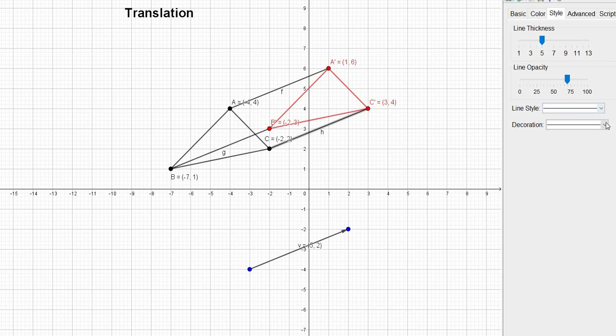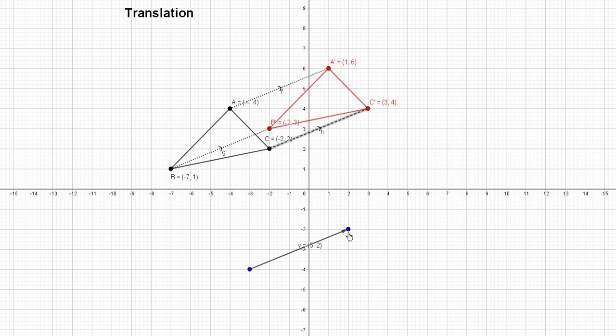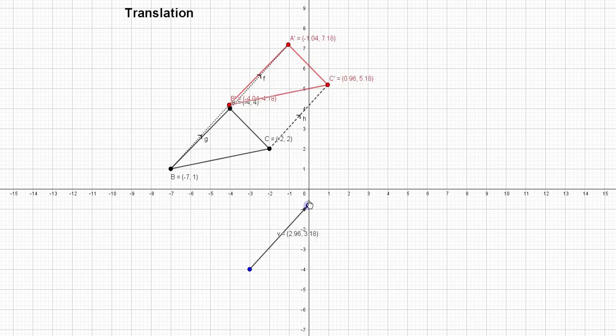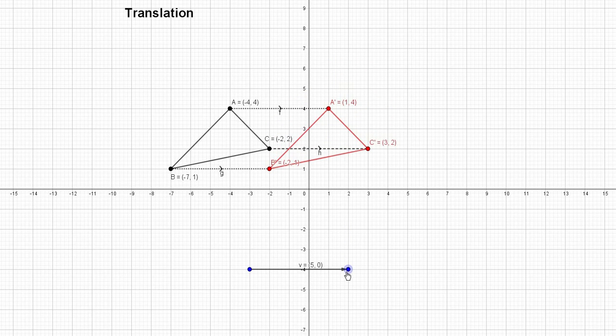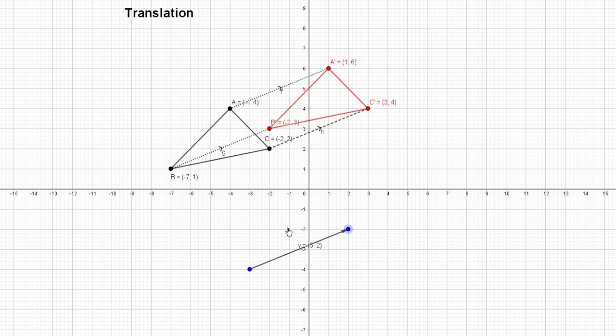Similarly, I'm going to connect this object A' with B', B' with C'. For that one, the arrow style, and let's change the properties to dashed line.